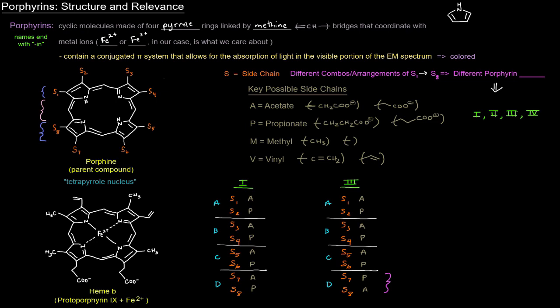We have this parent compound of porphyrins called porphine, and it's got this tetrapyrrole nucleus — tetrapyrrole meaning four pyrroles — nucleus referring to the idea that it's the basic structure, similar to the steroid nucleus for steroid molecules with its three six-membered rings and one five-membered ring. Here we have a tetrapyrrole nucleus. Each portion has a pyrrole, and there are four of those pyrrole rings, specifically the A, B, C, and D rings, all connected by methane bridges. Each of those pyrrole rings has two side chains.